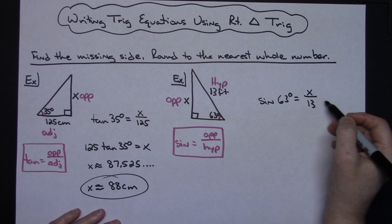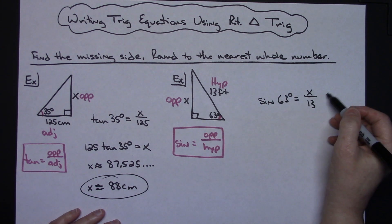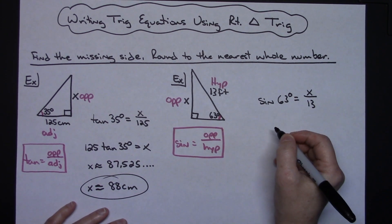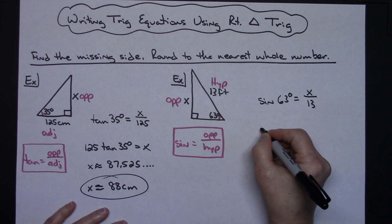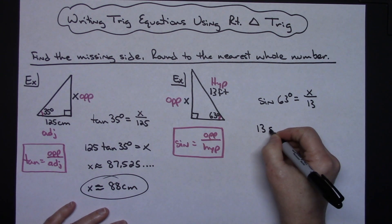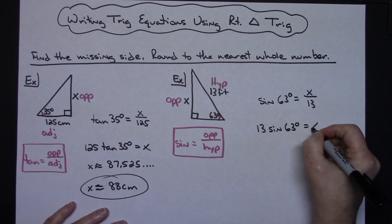I'm going to solve my equation now. Multiplying by 13 crosses it out on the right and puts it with the sine of 63 on the left, so 13 times the sine of 63 degrees equals X.